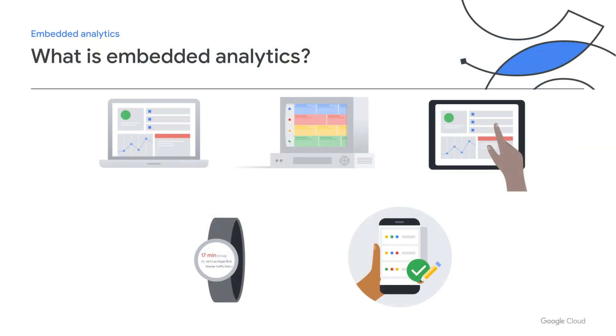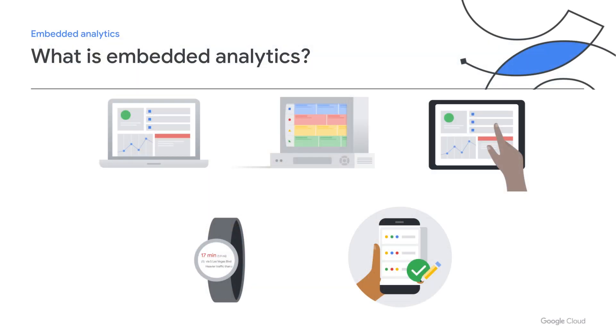When we talk about Embedded Analytics, what we're talking about isn't just embedding dashboards into applications or portals. We're talking about integrating data into any experience in order to help a user make a data-backed decision. As an example, when I'm booking a flight through Google, I'm able to see price trends that help me determine whether to buy my ticket now or to wait. Or, even more recently, in the middle of my fantasy football draft, I was able to see player stats and projections that helped me decide who to draft next. Embedded Analytics is all about putting data in front of someone when and where they need it.